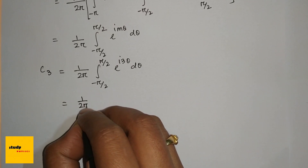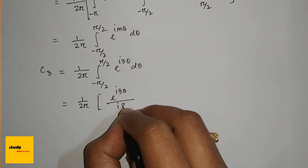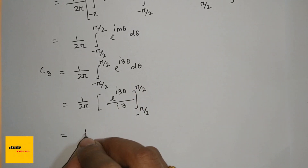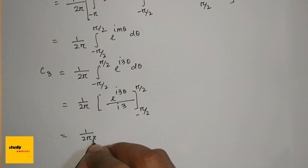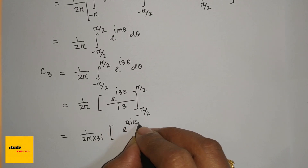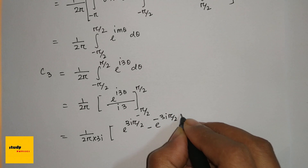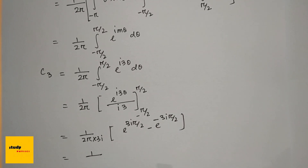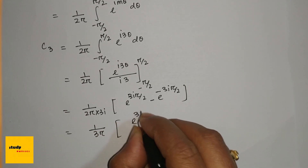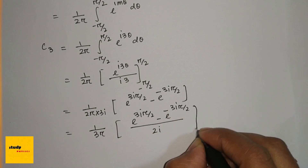Evaluating the integral: 1/(2π) · [e^(i3θ) / (i·3)] from −π/2 to π/2. This gives 1/(2π · 3i) · [e^(i·3π/2) − e^(−i·3π/2)]. Using the identity (e^(ix) − e^(−ix))/(2i) = sin(x), this becomes 1/(3π) · sin(3π/2).